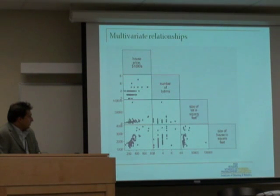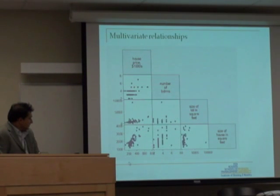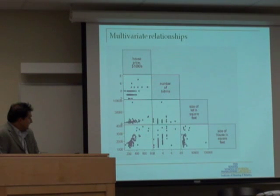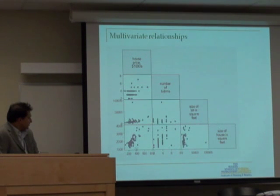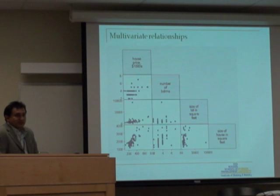If you look at the lot size in square feet, as lot size increases so does the price of the house, but it's not a very strong relationship. However, if you look at the relationship between the built-up area in square footage — ranging from 1,000 to 4,000 square feet — and the price, there is a very strong, nearly linear relationship. The real relationship is most visible for house size in square footage versus house price, more so than any other variable.